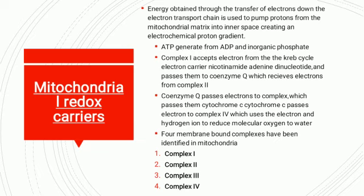Coenzyme Q passes electrons to Complex 3, which passes them to cytochrome C. Cytochrome C passes electrons to Complex 4, which uses electrons and hydrogen ions to reduce molecular oxygen to water. There are four membrane-bound complexes identified in mitochondria: Complex 1, Complex 2, Complex 3, and Complex 4.